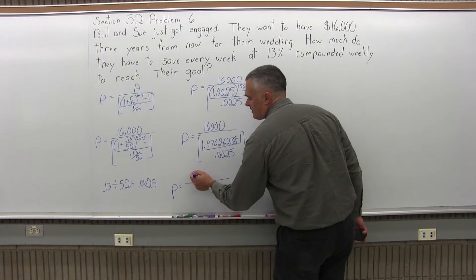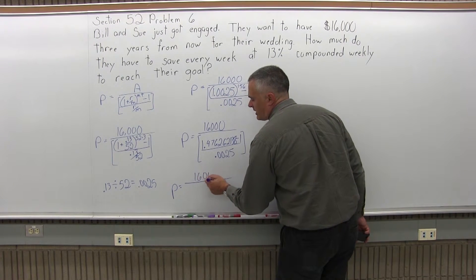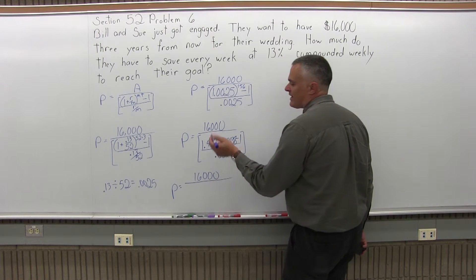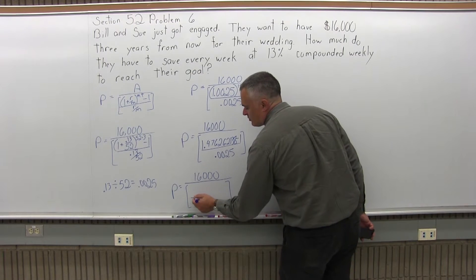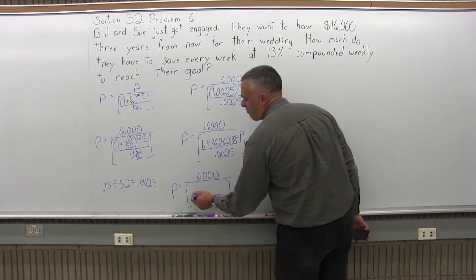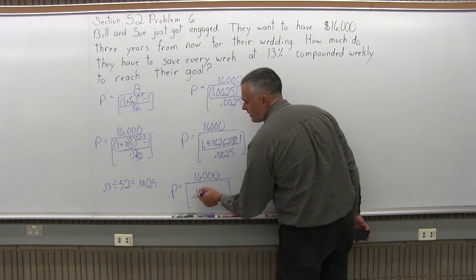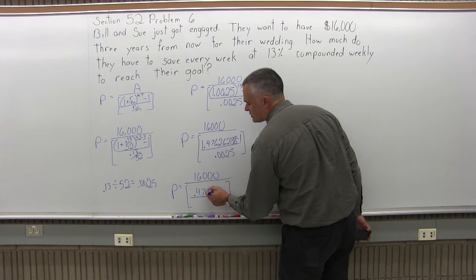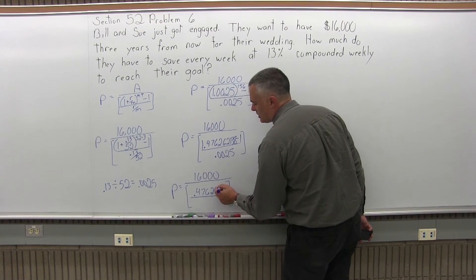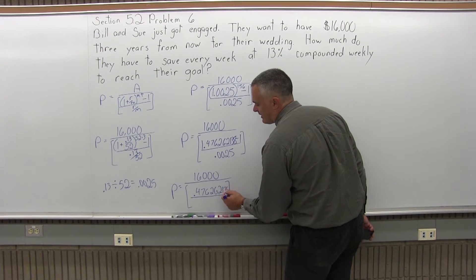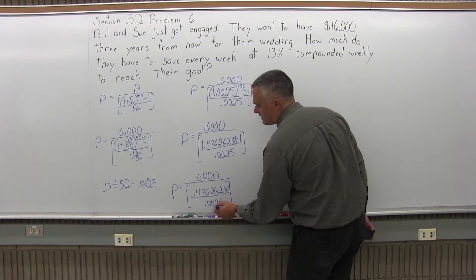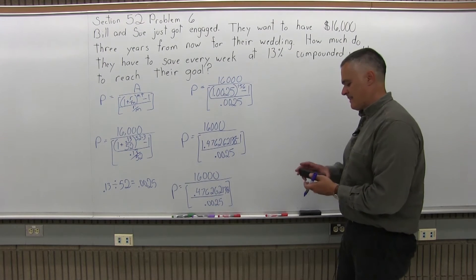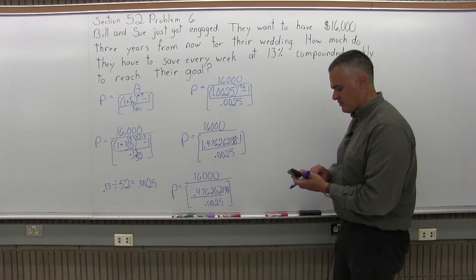So the next part of the problem, I'll just do the minus 1. I'll have 16,000 in the numerator of my formula still. Now the brackets will have, in the numerator of the brackets, 0.476262138, and in the denominator of the brackets, 0.0025. Let me just catch up on the calculator. I'll do minus 1.